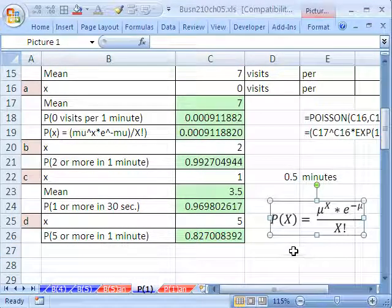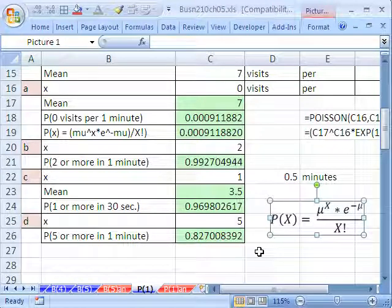That's a little bit about the Poisson. That's it for chapter 5. We'll see you next chapter for continuous probability distribution.